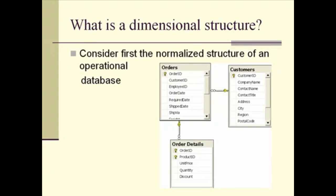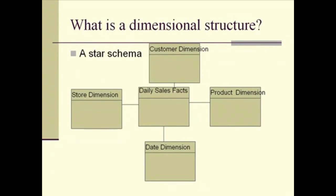We collect that information only once in the orders table. Related to our order is a customer, and that relationship uses the customer ID number. We don't repeat the customer's name or address on each row in the orders table — we simply refer to that information using the customer ID. Our normalized structure reduces any replication of data, which is very good for data entry, because if we have to change something, we don't want to change it in more than one place. The dimensional structure, however, is not focused on data collection but rather on analysis of data.